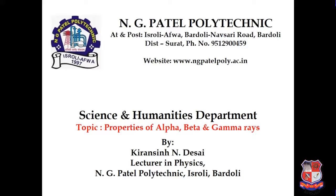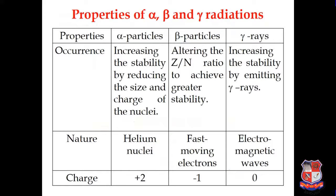How we can distinguish all those three — alpha particle, beta particle, and gamma rays? When we consider alpha particle, it increases stability by reducing the size and charge of the nucleus. Beta particle alters the atomic mass to neutron ratio to achieve greater stability. But when we consider gamma rays, stability is increased by emitting gamma rays, and when emitted from any nucleus it will be highly stable.